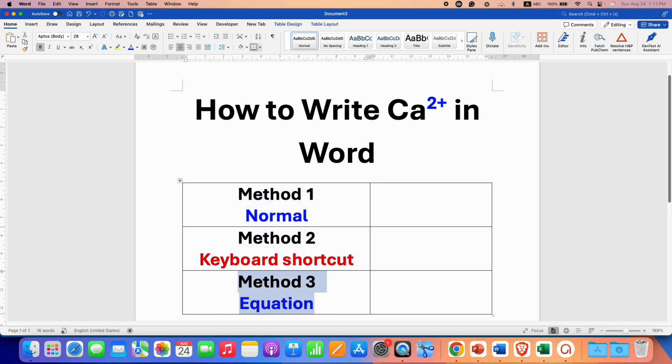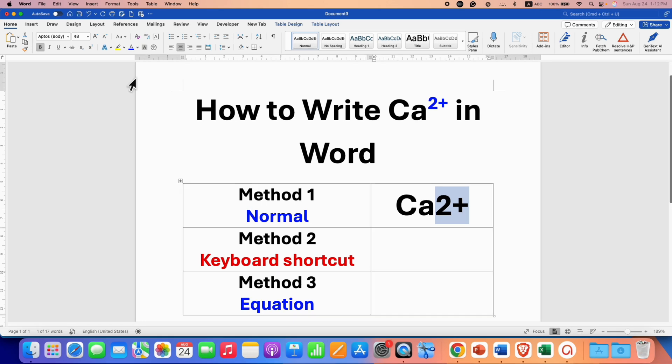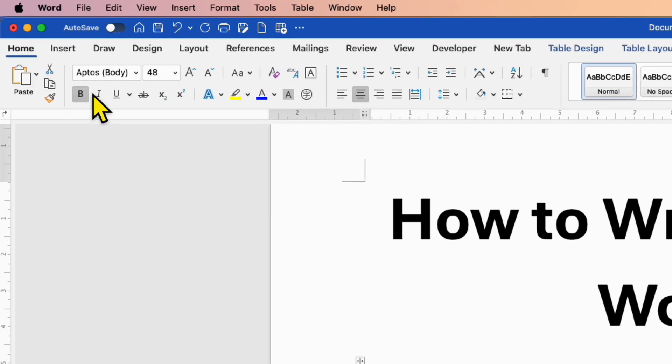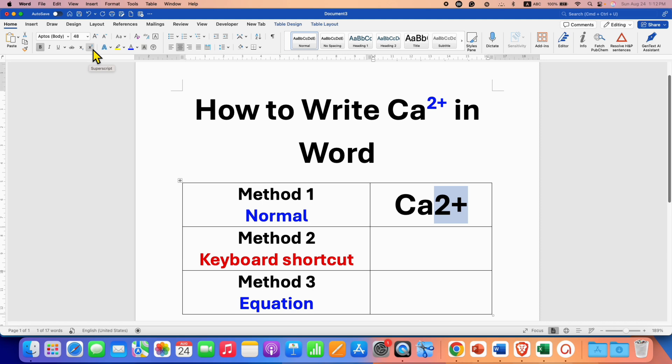The third one is used for writing equations. In the first method, just type Ca2+, then select the 2+ using a mouse or keyboard. After highlighting, under the Home tab, you will see the option of X square. This X square is a superscript option. Just click on this option and you will get the 2+ as a superscript.